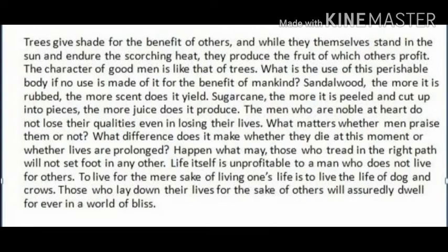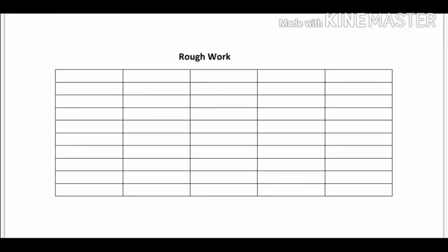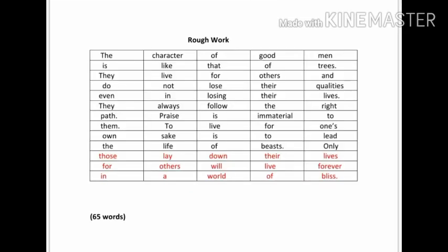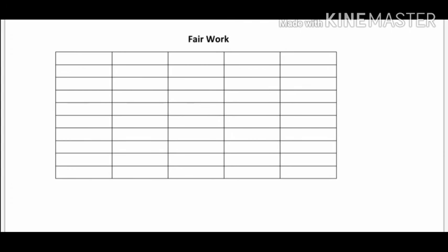Read the passage twice or thrice. Take a new page in your notebook. On the first line, write down 'rough work.' Then make 50 columns. In your rough work, you may have more than 50 words — you need not worry for that. Look at the screen; you will find more words on the screen. Try to reduce the number of words. Take the next page, draw 50 columns, and write 'fair work' at the top.